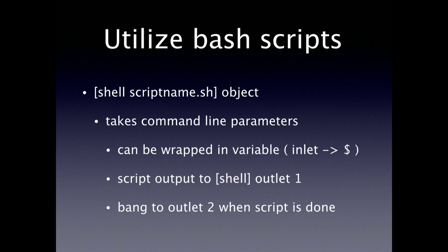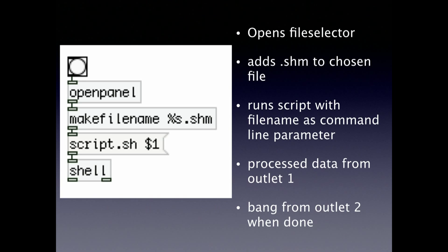You can also utilize shell scripts. If you want to do some text file conversions, which can be a little hard in Pure Data, you can use the shell object - just give it the object name and command line parameters. It gets the shell output to outlet one and bangs outlet two when the script is done. For example, an open panel opens a file selector, then it runs the script with the file name as a command line parameter. So it's really simple if you don't want to hard-code things like MIDI file processing - you can do it in a script, and it's good for one-time format conversions to something more PD-friendly.